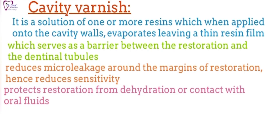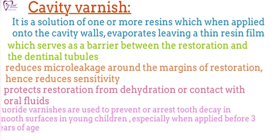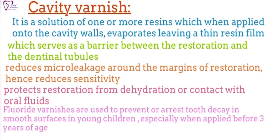Varnish protects the restoration from dehydration or contact with oral fluids, which is usually required for GIC. Fluoride varnishes are used to prevent or arrest tooth decay on smooth surfaces in young children, especially when applied before the age of three years.